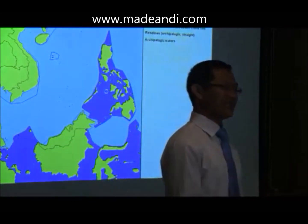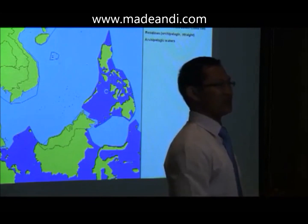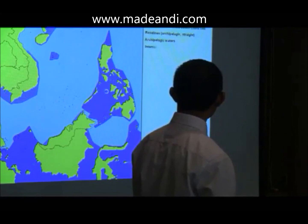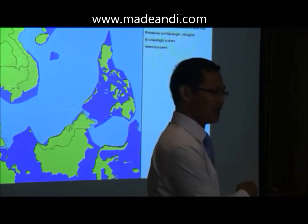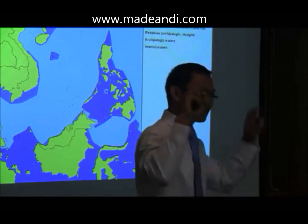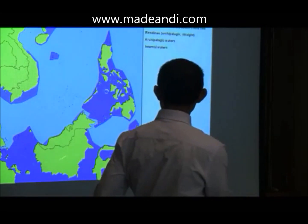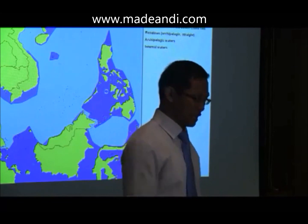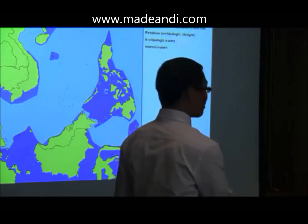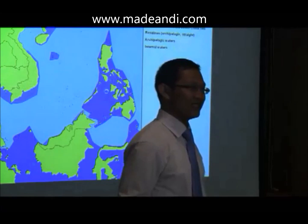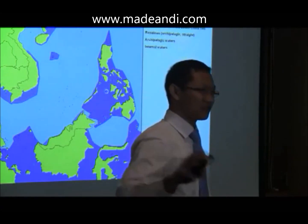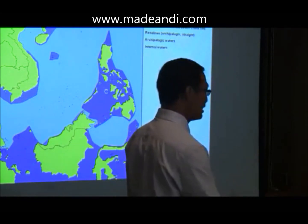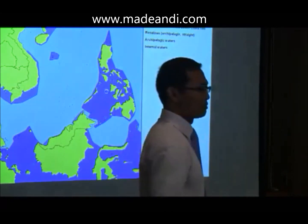So there are two archipelagic states in this area: Indonesia and the Philippines. See the different status of this water — even though it is within the straight baseline, Indonesia and the Philippines are entitled to what we call the archipelagic baseline. But this is not an archipelagic baseline, but a straight baseline. So it is governed by different provisions in the Law of the Sea Convention: Article 7, straight baseline; Article 47, archipelagic baseline. The characters are different.